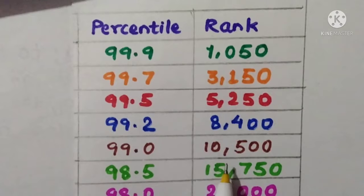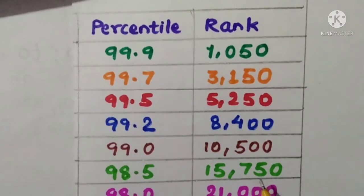For 99 percentile it is 10,500. So if you want to take CS in higher NITs then you will have to secure 99.9 percentile, that is 10,500. Now for 98.5 percentile it is 15,750.